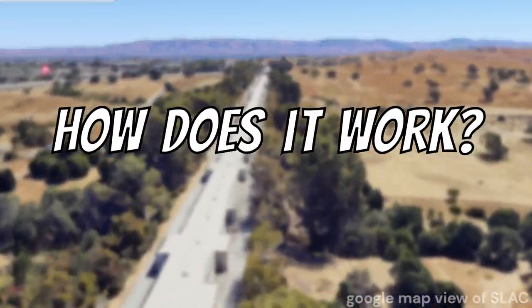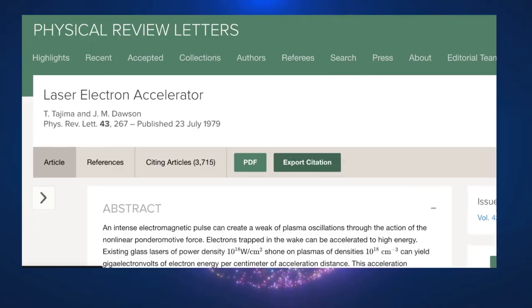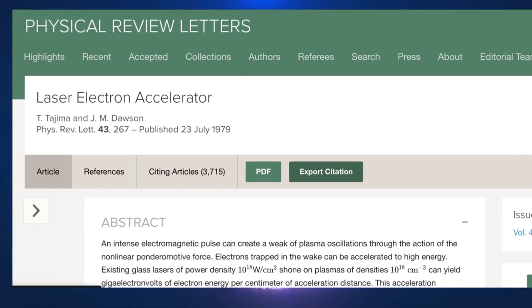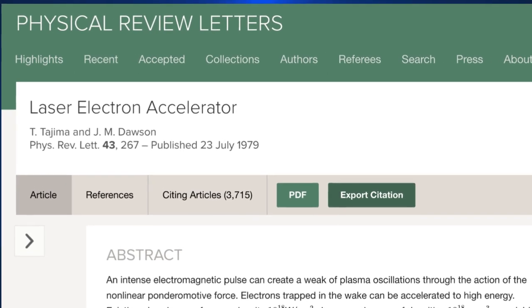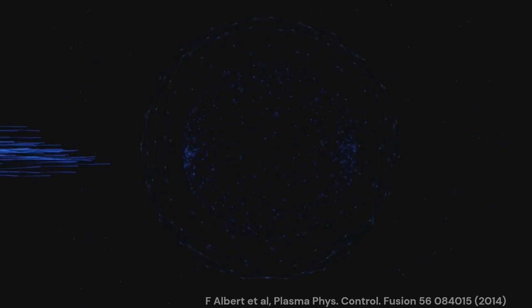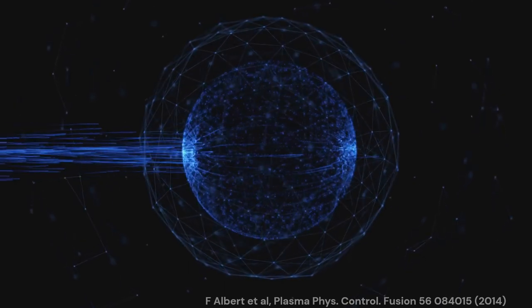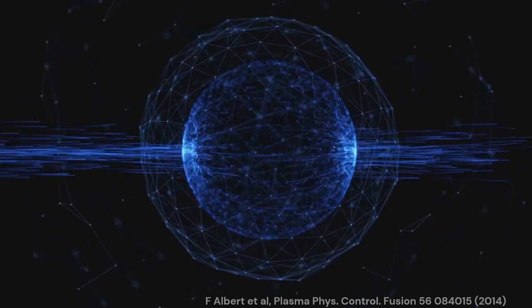So how does it work? If we look back at the theory laid down in 1979, a Laser Wakefield Accelerator starts with a powerful short-pulsed laser hitting a low-density gas. The laser excites electrons of the gas and ionizes the gas, forming a plasma.